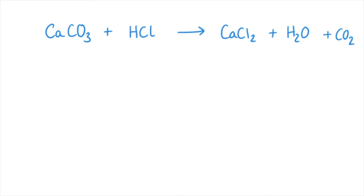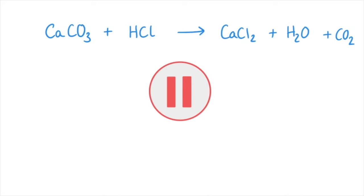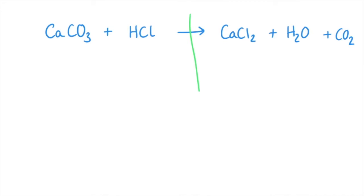In this equation, calcium carbonate is reacting with hydrochloric acid to make calcium chloride, water, and carbon dioxide. Pause the video at this point and have a go at balancing it using the same method. Once you're done, unpause the video and see if you got it right. So we've got calcium, carbon, oxygen, hydrogen, and chlorine — same on the other side as well.